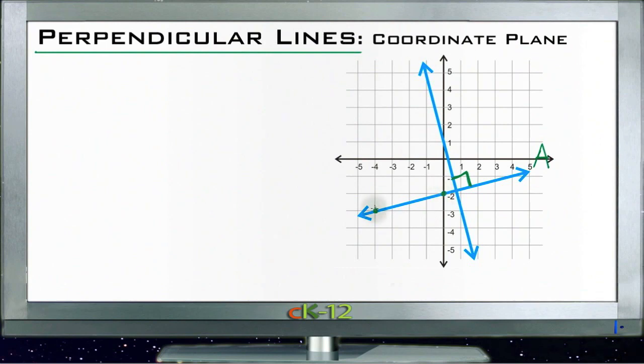To get from one to the other, we have to rise from negative three to negative two and then run from negative four to zero. So we rise one and we run four. So that tells us our slope is one fourth, and it's positive of course because we're rising from left to right.